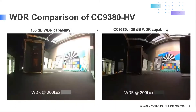Here we have a comparison of wide dynamic range. The CC9381 has the capability of 120 dB of wide dynamic range, versus the previous generation which had just 100 dB. That extra 20 dB makes all the difference.